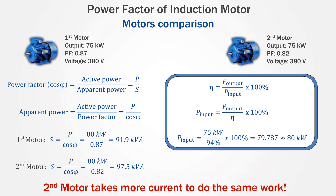Another way to look at it is that at 82% power factor, the second motor takes more current to do the same work. More current means greater conductor size, so it's going to cost more. More current causes more copper losses, which results in poor efficiency. And more current causes greater voltage drops in power supply equipment, which will cause equipment to not function properly or at all.